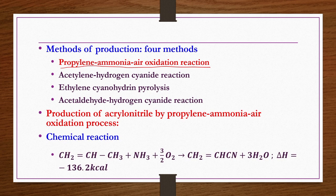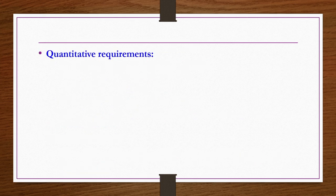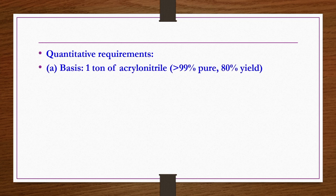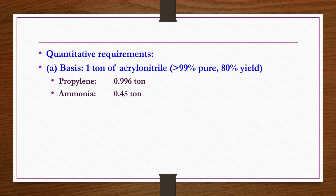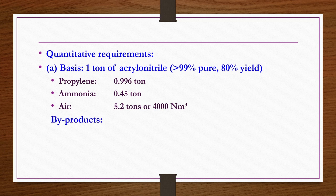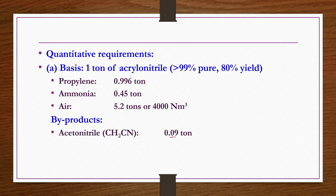In the chemical reaction, propylene reacts with ammonia and oxygen to produce acrylonitrile along with water, and it is highly exothermic. Quantitative requirements: to produce 1 ton of more than 99% pure acrylonitrile with 80% yield, propylene required is 0.996 tons, ammonia 0.45 tons, and air 5.2 tons or 4000 normal cubic meters. Byproducts include acetonitrile at approximately 0.09 tons and hydrogen cyanide at 0.08 tons. Plant capacities vary from 50 to 125 tons per day.